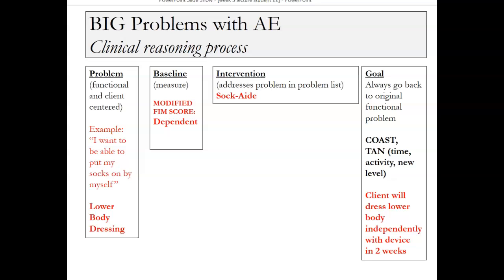This is what the reading was about — I would go back and look at that now. It's in the lessons book; it really breaks down how to do this. And again, this is something you're going to have to know for your exam. I have copies of that book if you've never bought one, and I think there are copies in the library as well. So: the problem list. What are the problems that are relevant to this client? Function-centered problems. We're not saying they have Parkinson's disease — we're thinking about the functional problems. What can't they do? Can't get their socks on, can't dress their lower body, can't get their shirt on, can't get on and off the toilet, can't make a meal.